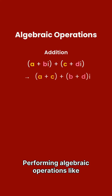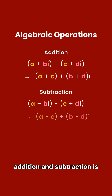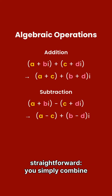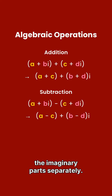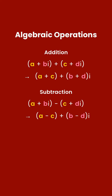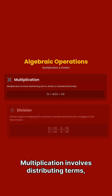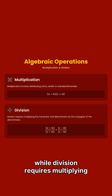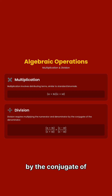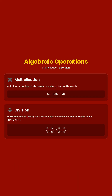Performing algebraic operations like addition and subtraction is straightforward — you simply combine the real parts and the imaginary parts separately. Multiplication involves distributing terms, while division requires multiplying by the conjugate of the denominator to simplify the expression.